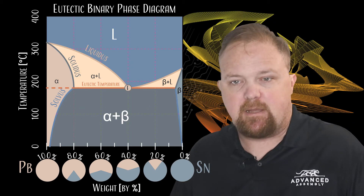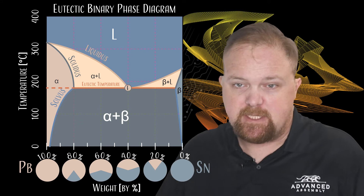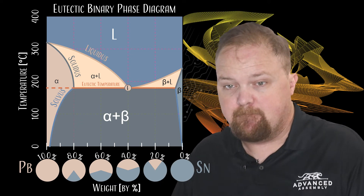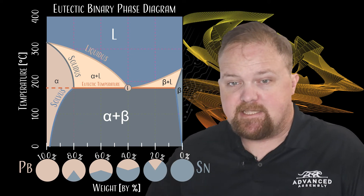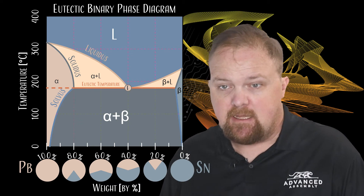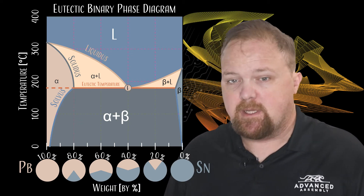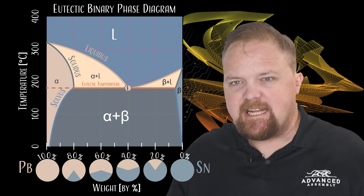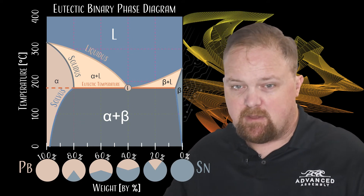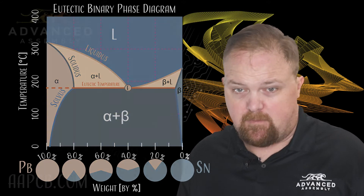Phase diagrams for lead-tin mixtures usually show the relationship between temperature and the mass ratio of lead and tin. At 62% tin and 38% lead, the solidus and liquidus temperatures meet at the eutectic point. The eutectic temperature is a discrete transition temperature that is lower than the transition temperature of either substance in pure form.